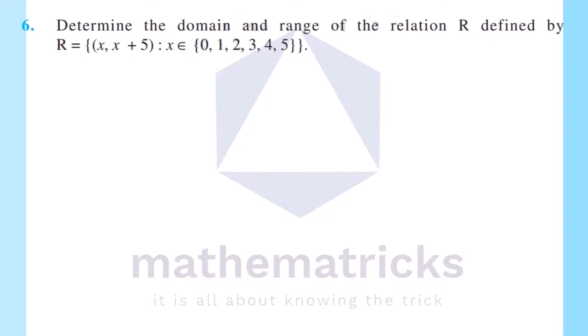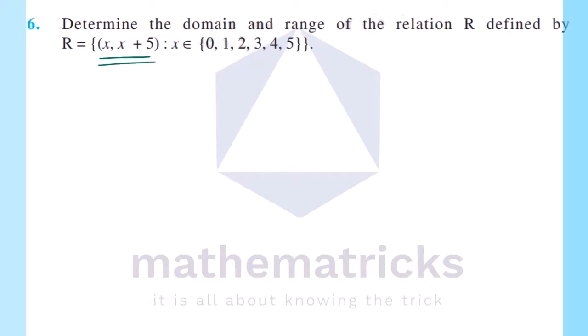Sixth question: determine the domain and range of the relation R defined by R equals the set of all (x, x+5) such that x belongs to {0, 1, 2, 3, 4, 5}. Here we have a relation and we need to find its domain and range. The relation is (x, x+5).